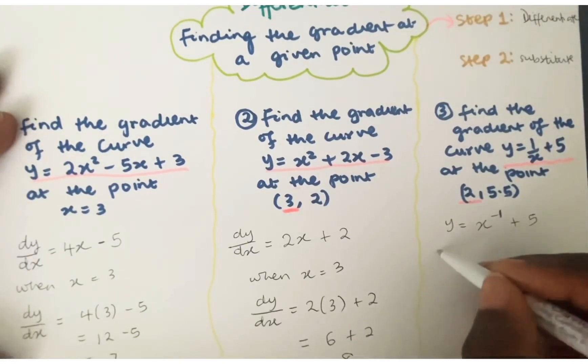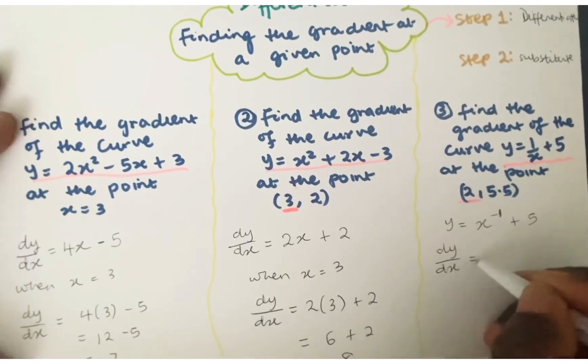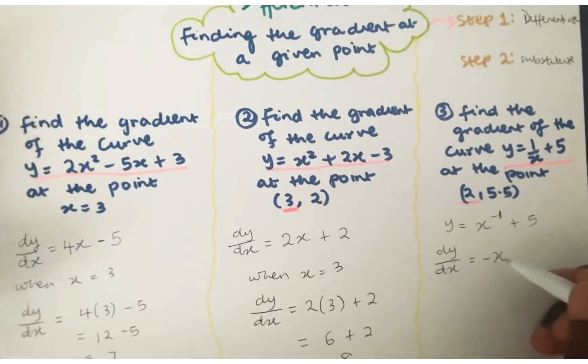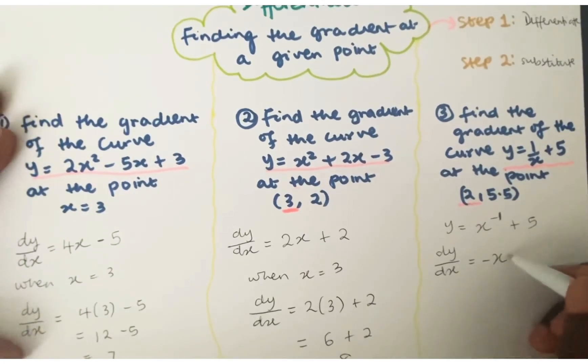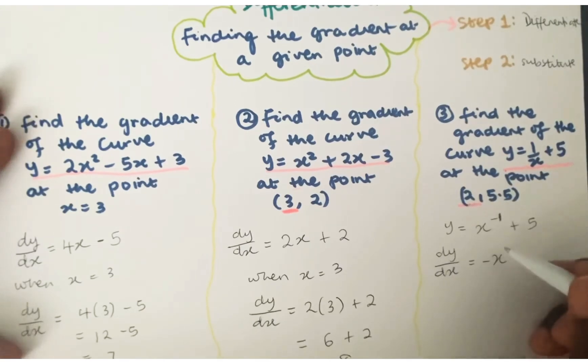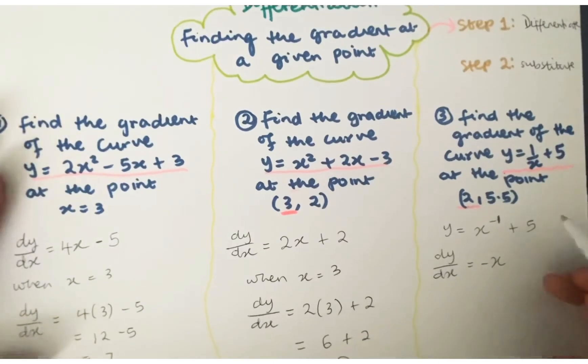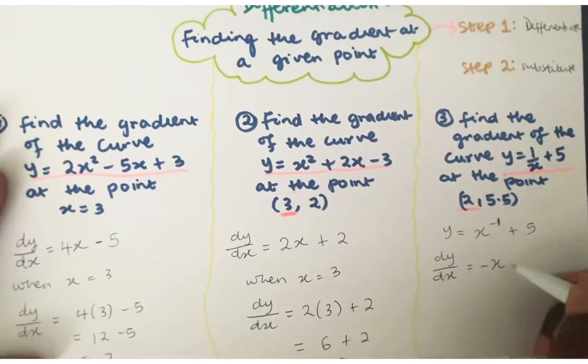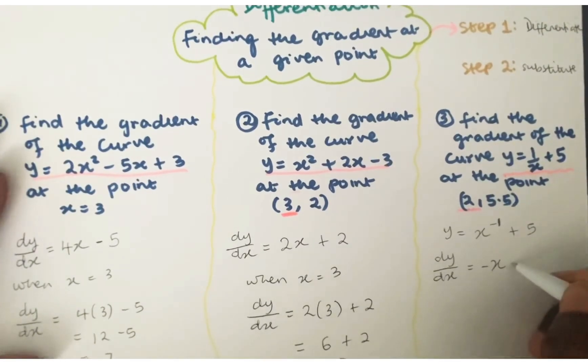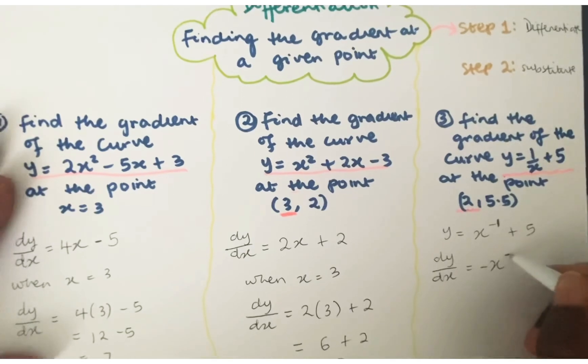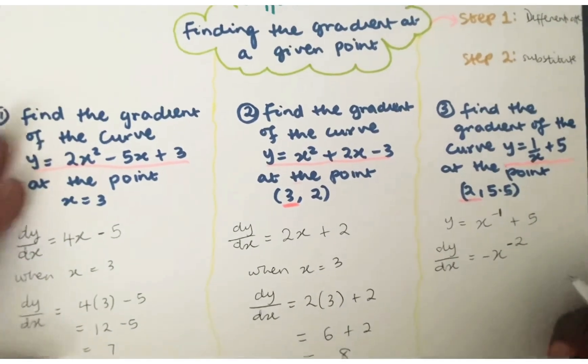When we differentiate that, dy by dx would be equal to negative x, because negative 1 times 1 would be negative 1. And then if we reduce the power by 1, then that would just be x to the power of, we won't have any powers anymore. And if we reduce the power by 1, then we would have negative 2.